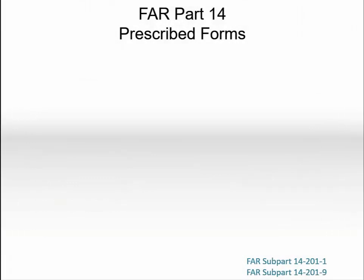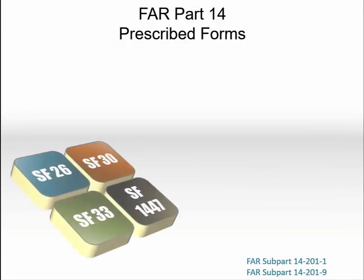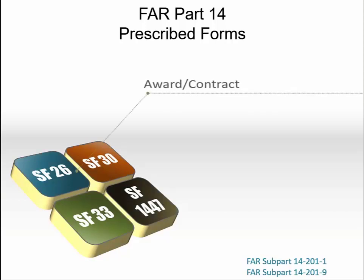There are four forms prescribed by the FAR for use with FAR Part 14 solicitations and contract awards. Standard Form 26 is for use in awarding sealed bid contracts for supplies or services when bids were obtained on the Standard Form 33.